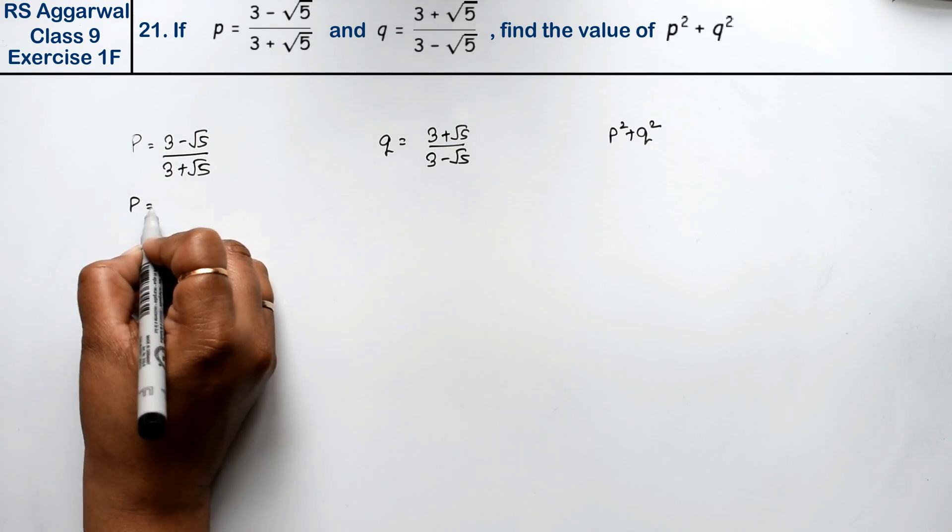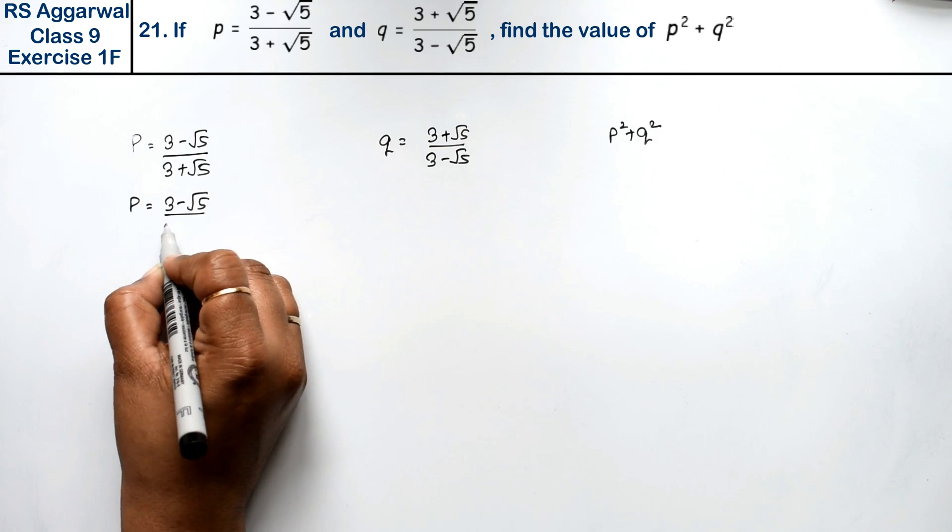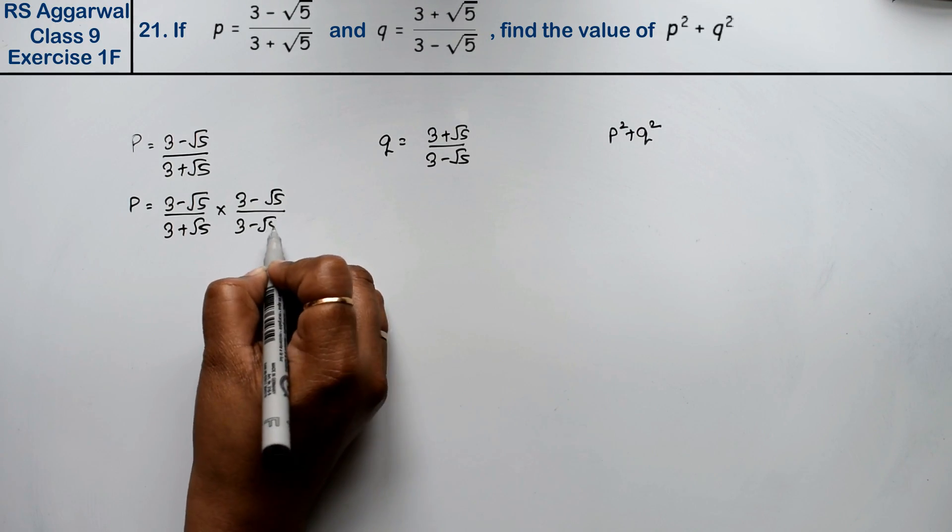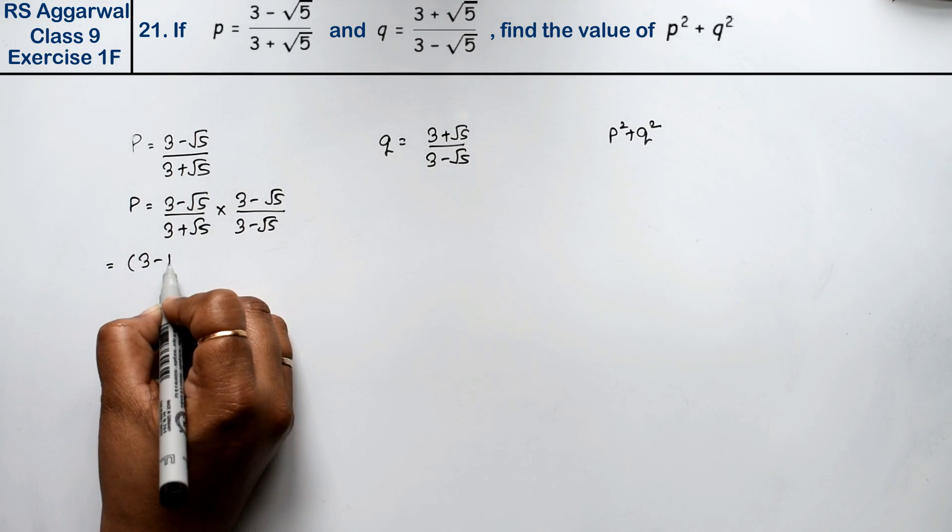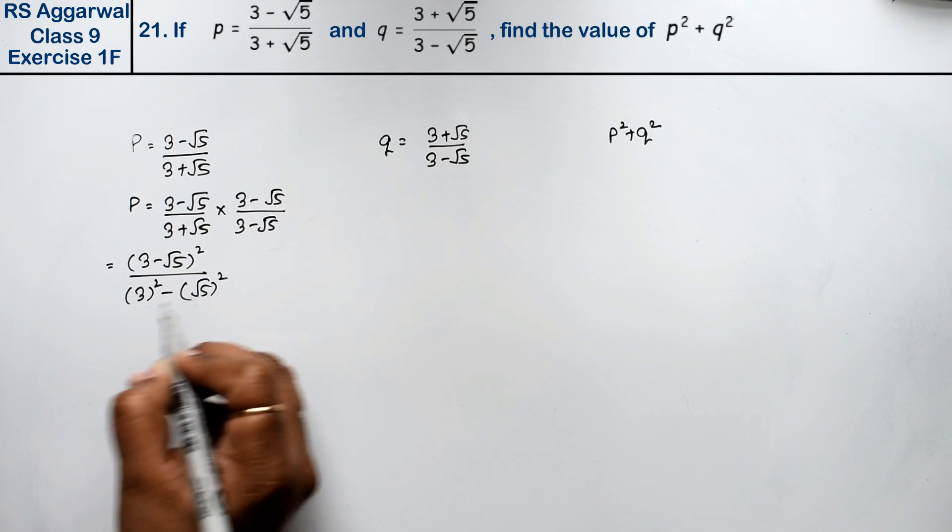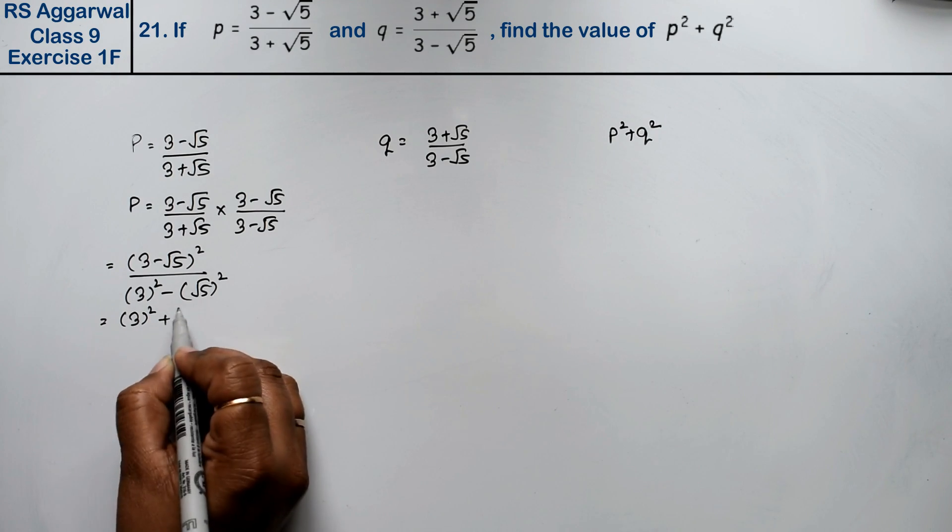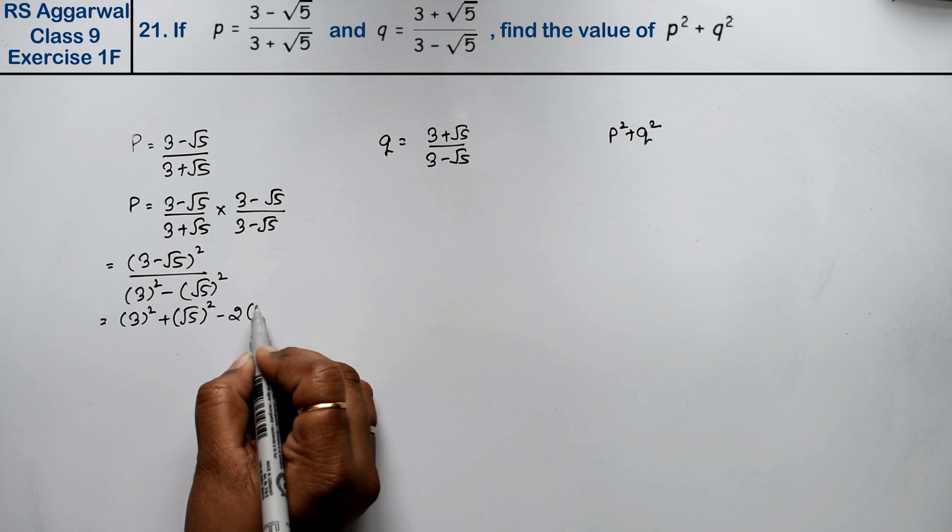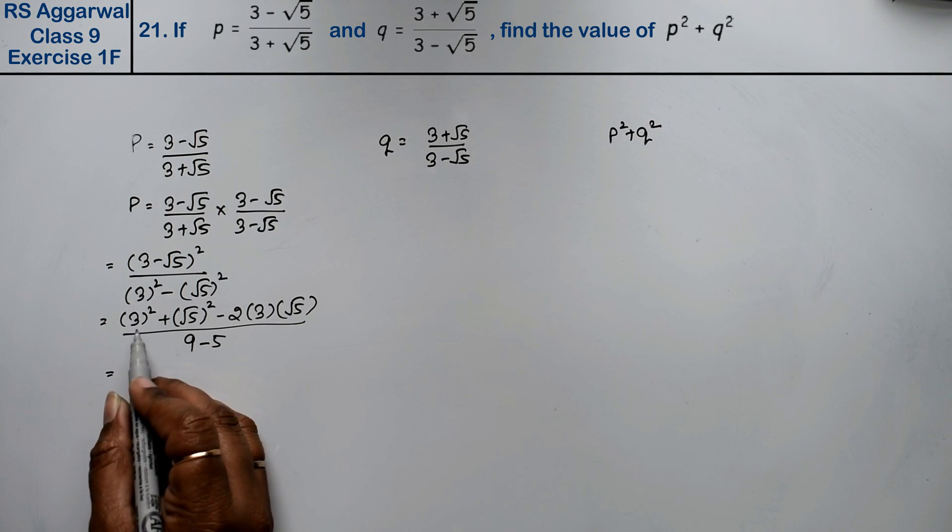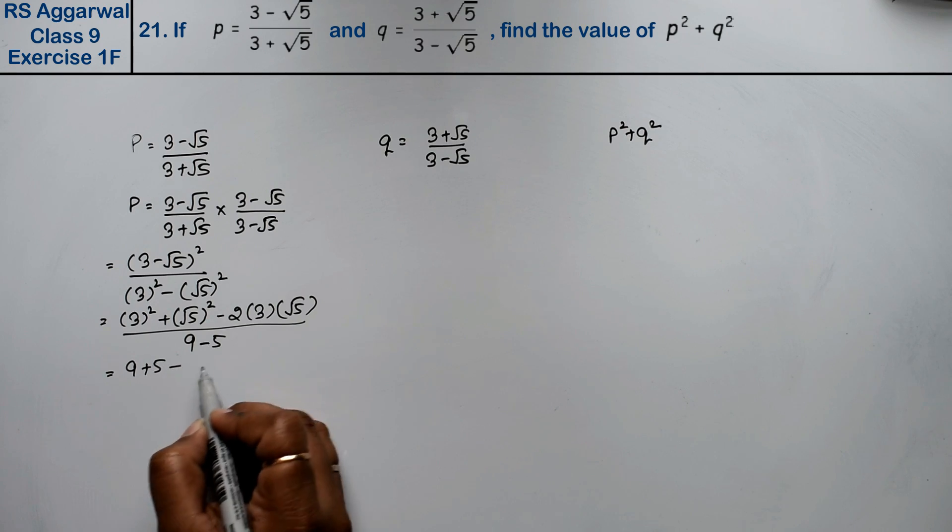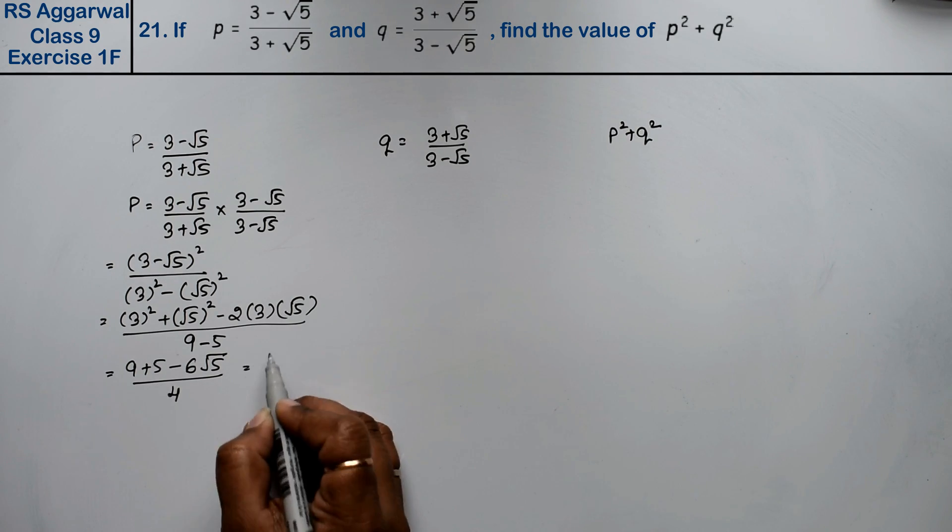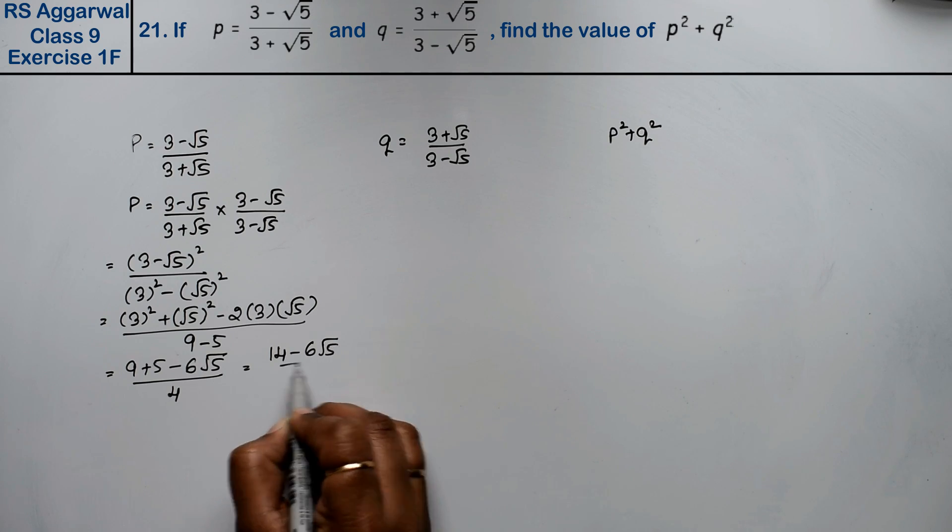Now we will rationalize p. 3 minus root 5 upon 3 plus root 5, rationalize it by 3 minus root 5. So this becomes 3 minus root 5 whole square upon 3 square minus root 5 square. That is a square plus b square minus 2ab upon 9 minus 5. So this becomes 9 plus 5 minus 6 root 5 upon 4. That is 14 minus 6 root 5 upon 4.